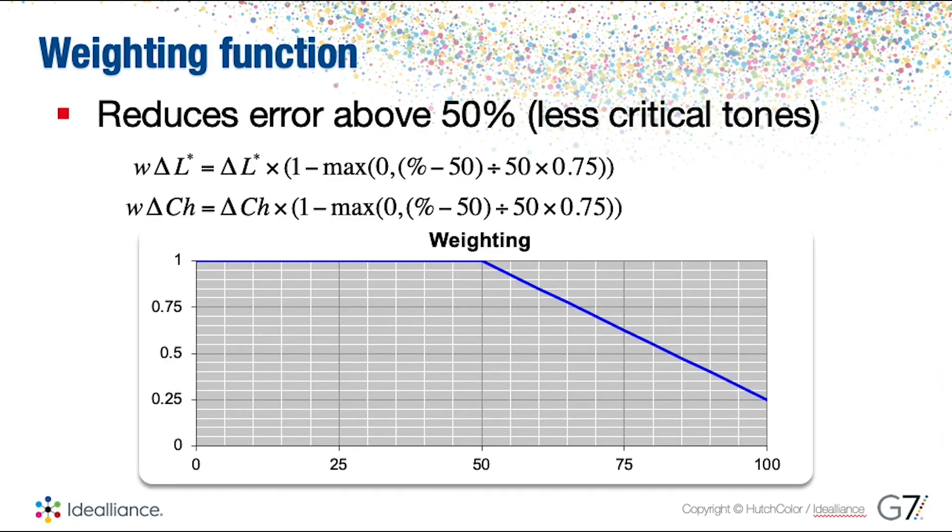Then it's applying the weighted function. The weighted function will reduce the error above 50 percent. So on those ramps, after the 50 as we move on to the 100, for measuring those patches beyond the 50 percent, it reduces the error of that difference or of that delta, and there you have the math for that.